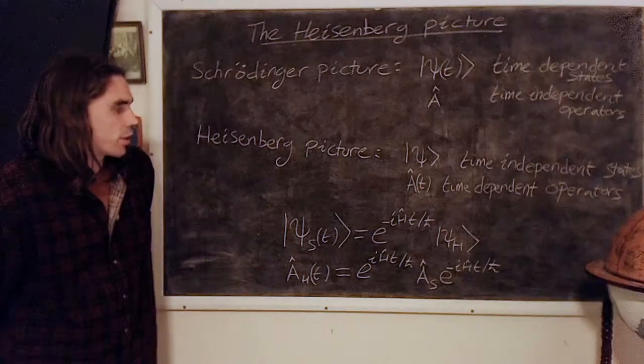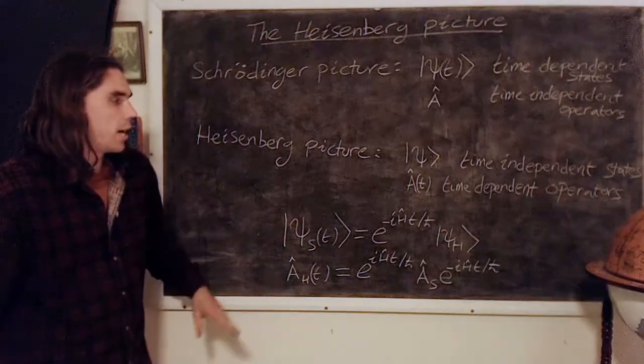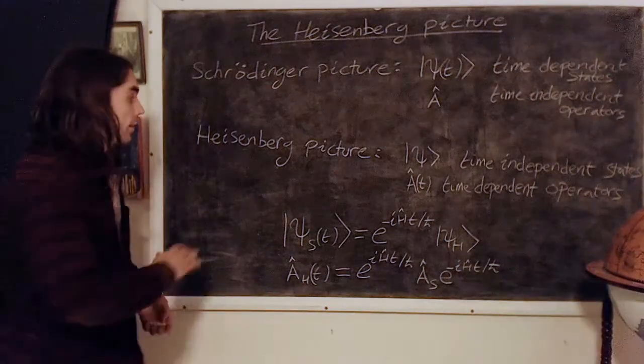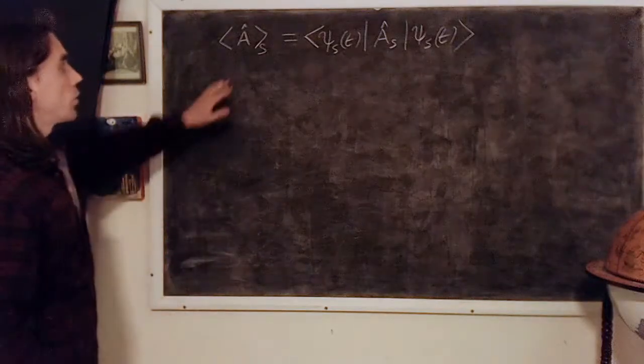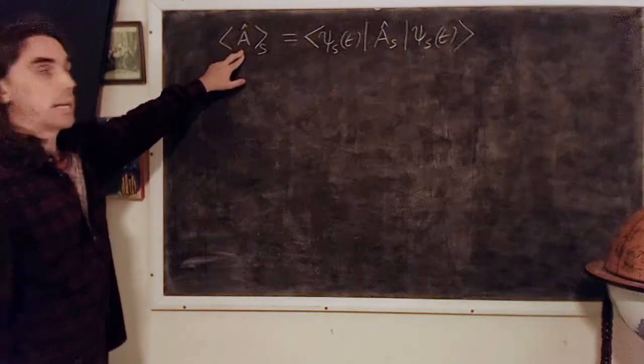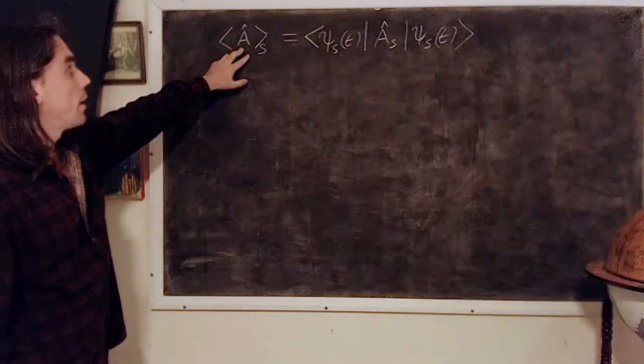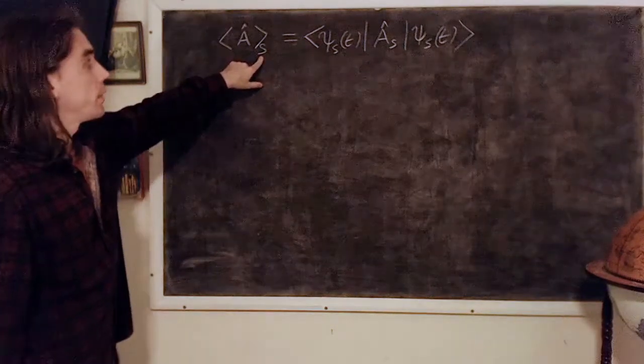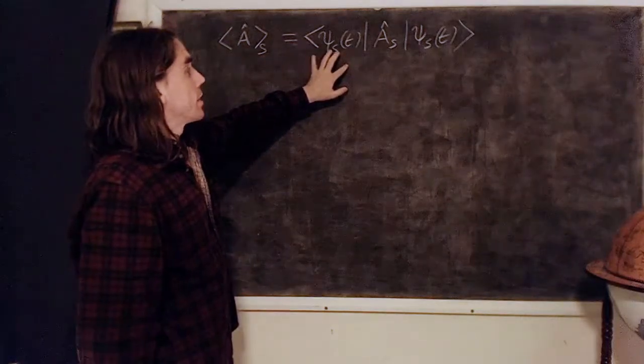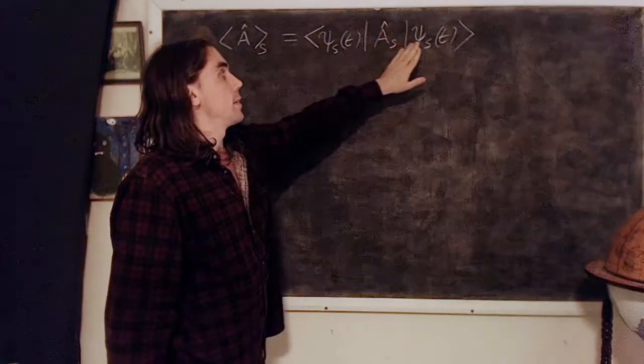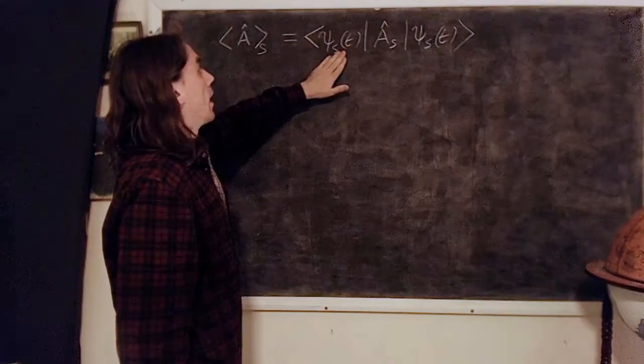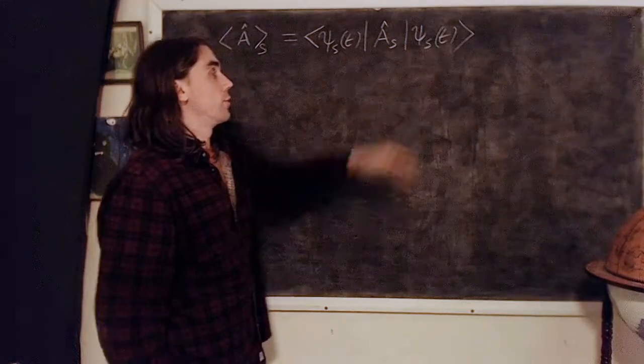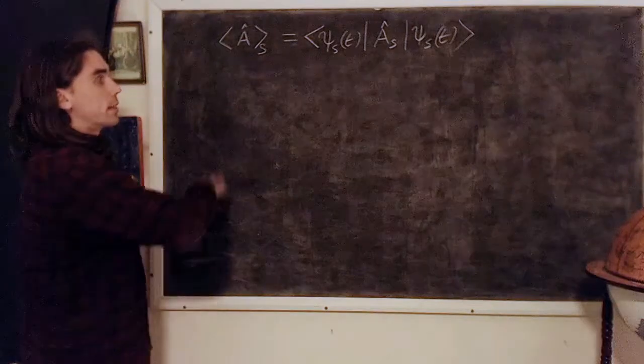This structure preserves expectation values, so let's take a look at that. The expectation value of an operator A, let's label it subscript S to say that we're in the Schrödinger picture, is just the operator which is time independent sandwiched between the states ψ which are a function of time.